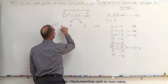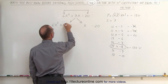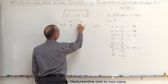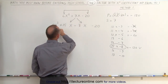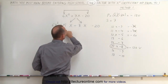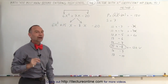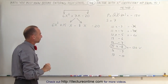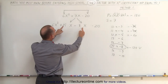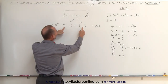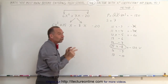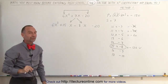So here you put down plus 15x and here minus 8x. That gives you a polynomial with four terms that you can now factor. When you add 15x and minus 8x, you get plus 7x — so you get the exact same expression, just written in a different format.